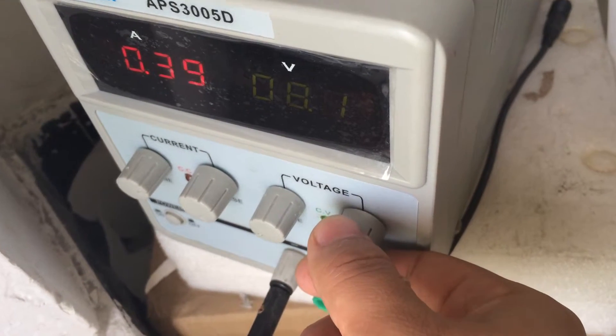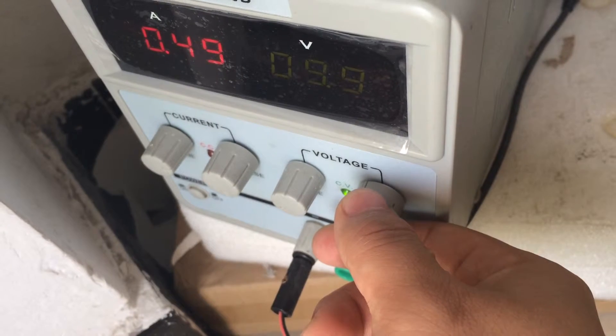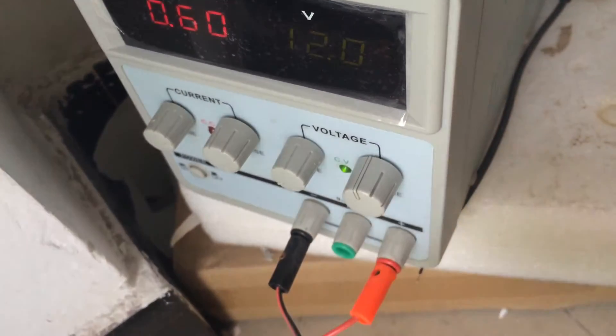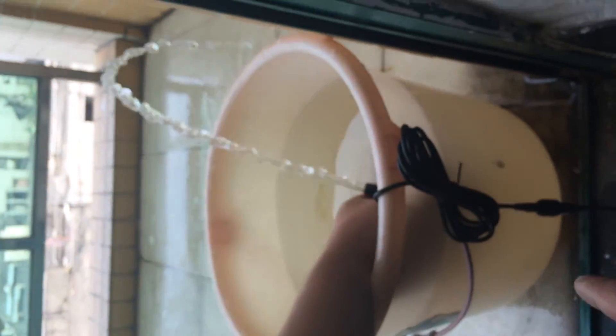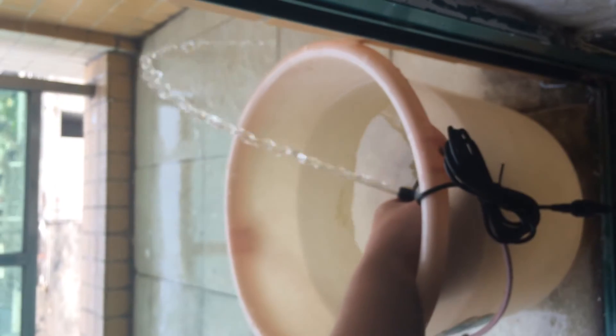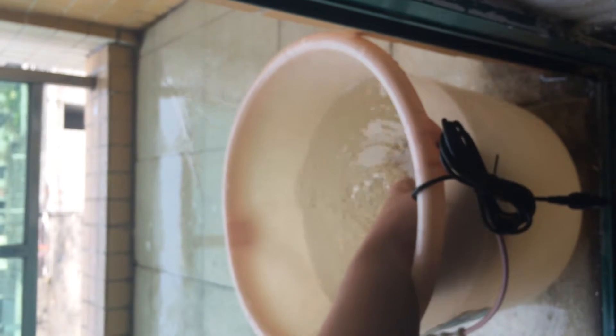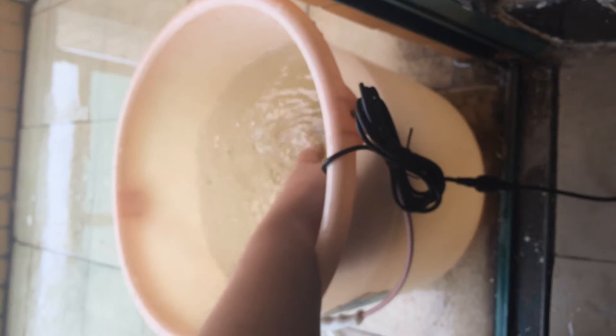Now, when we adjust the voltage to around 12 volts, we can see the flow, the spring. Note that here we show you the spring height, not the lift value, because now I don't have the tube at hand. So I can just show you the general performance.